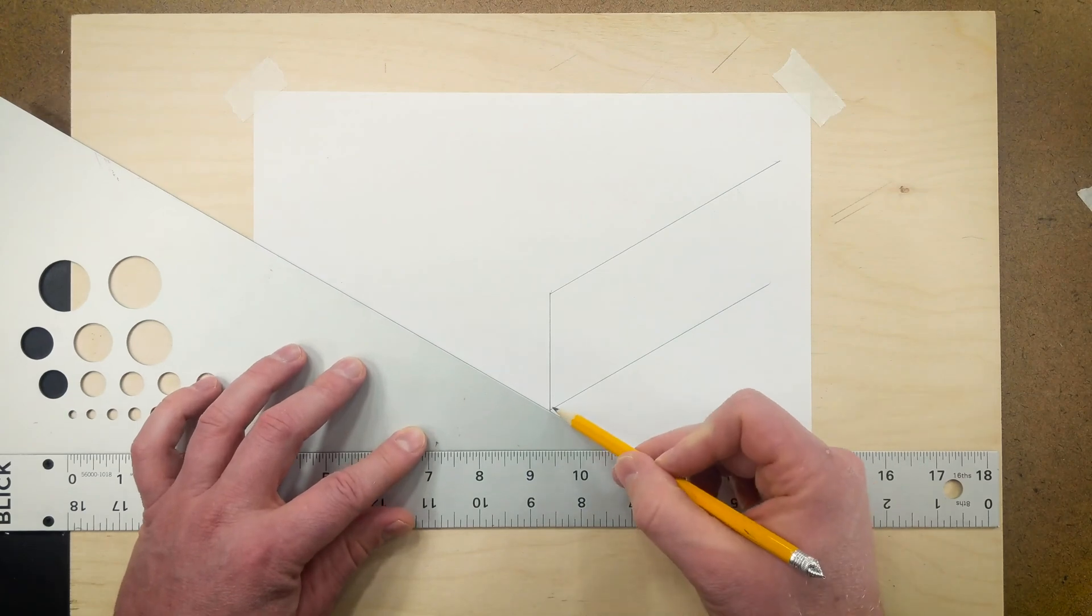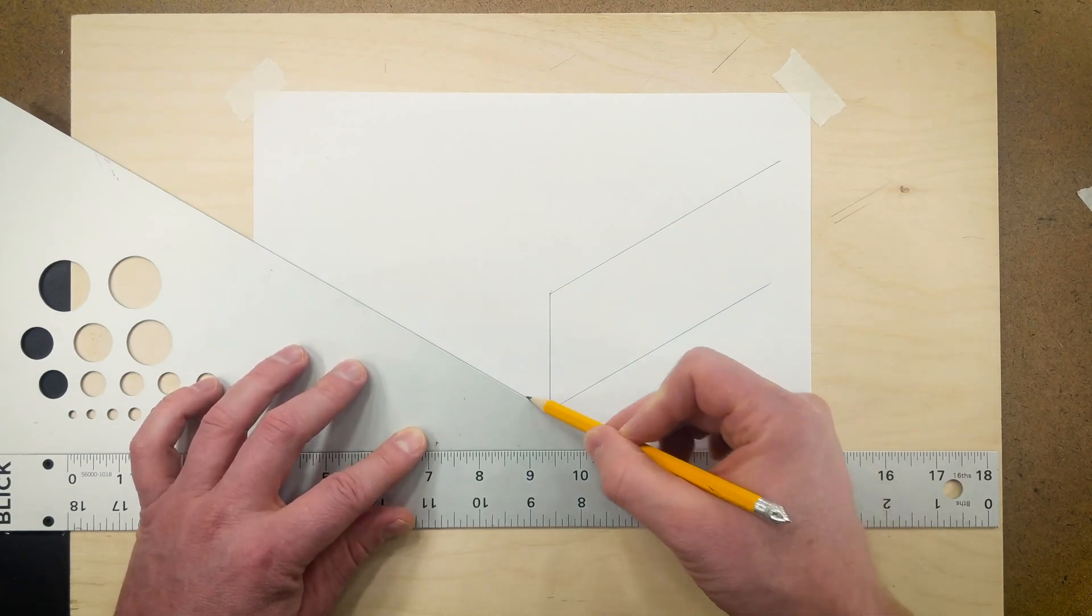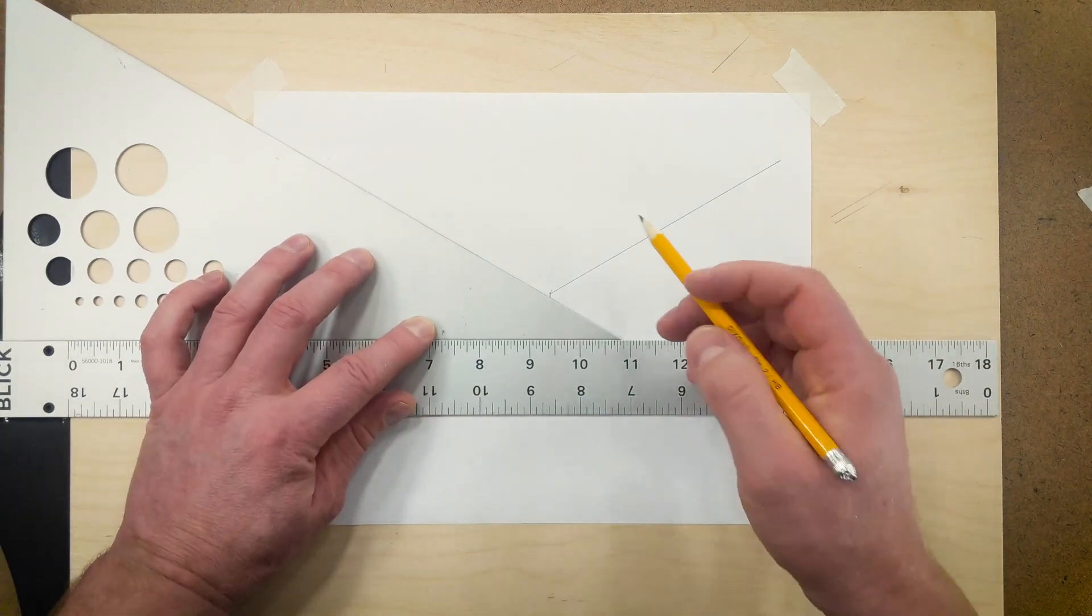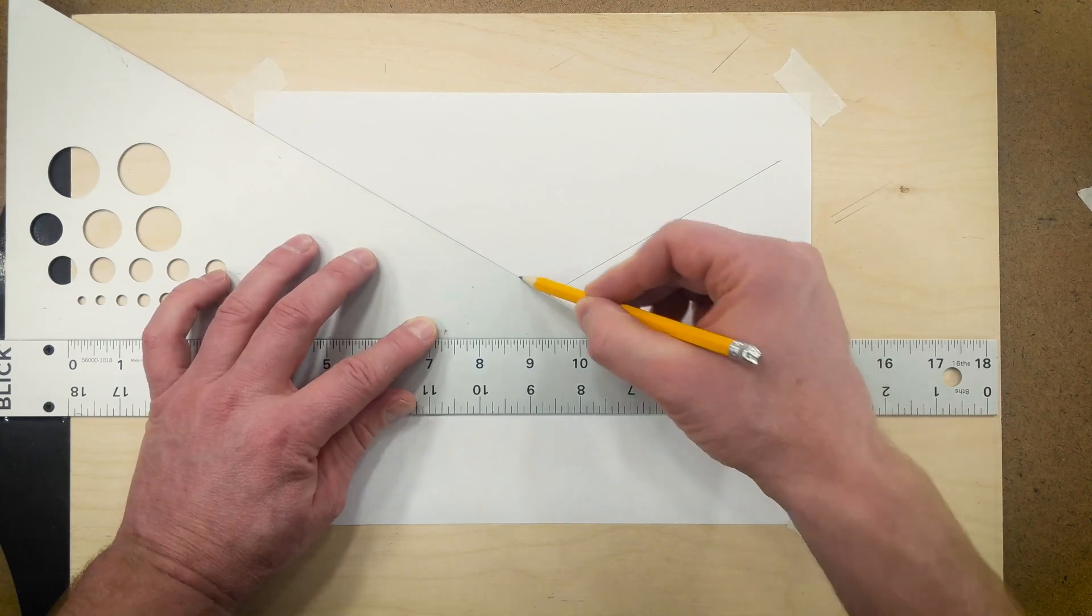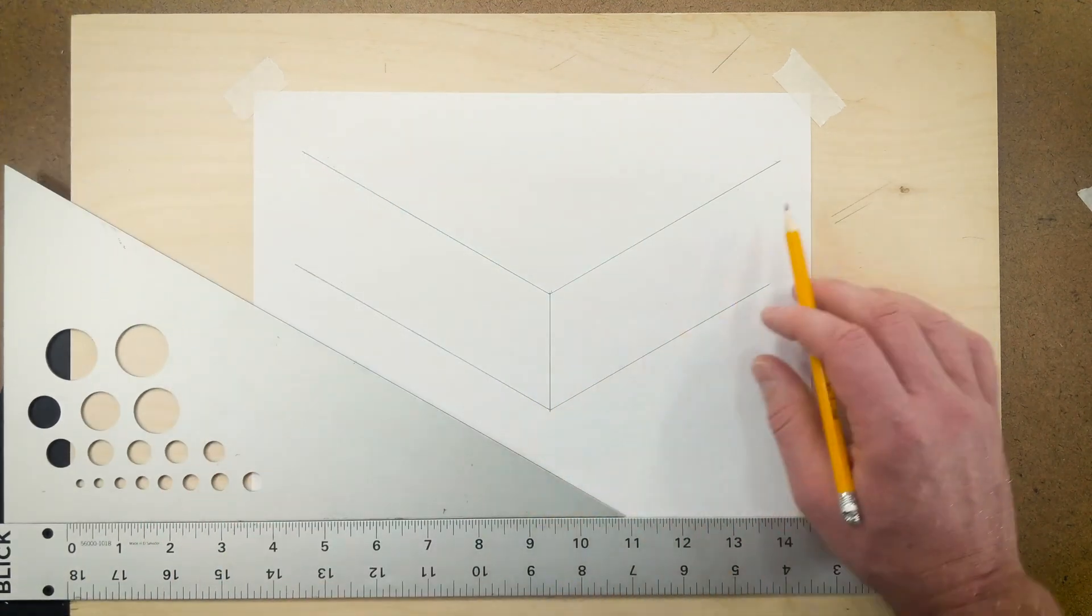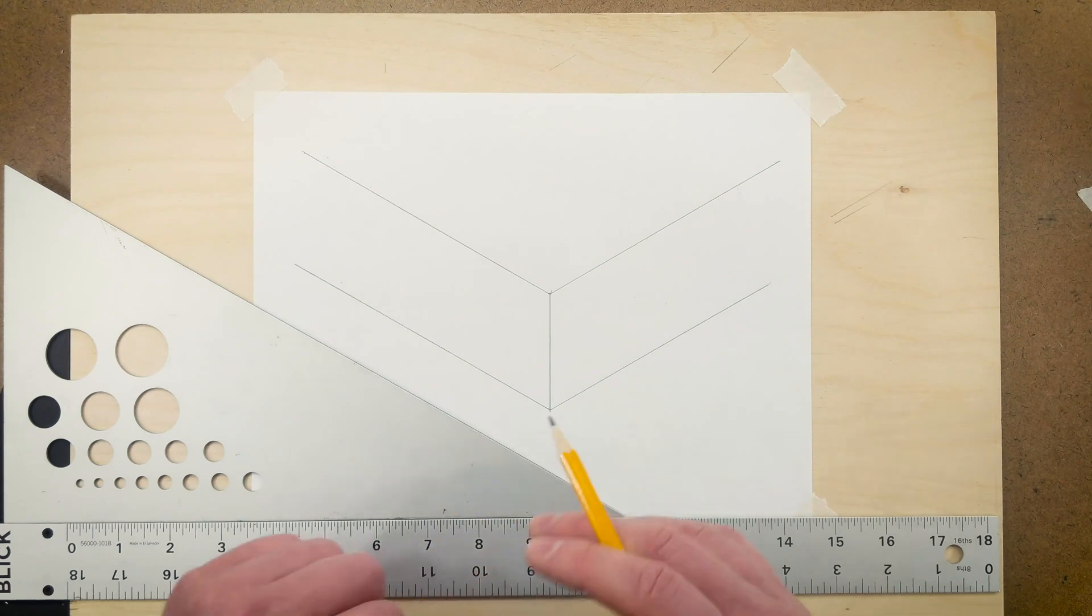Then flip the triangle over and draw from the bottom up the opposite 30-degrees. Slide the t-square up and the triangle up and draw again. Now we have the top and bottom of the two sides of the isometric cube.